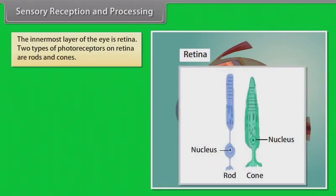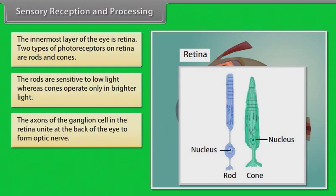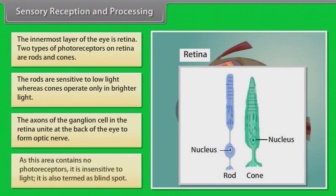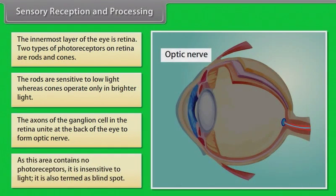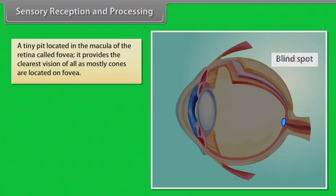The smooth muscles of the iris regulate the diameter of the pupil. The innermost layer of the eye is the retina. Two types of photoreceptors on the retina are rods and cones — rods are sensitive to low light, whereas cones operate only in brighter light. The axons of the ganglion cells in the retina unite at the back of the eye to form the optic nerve.